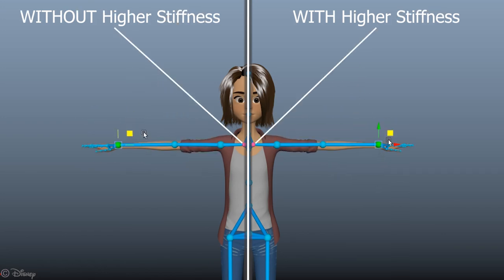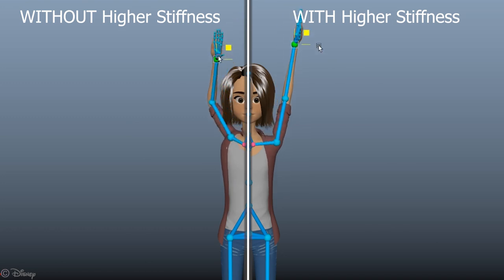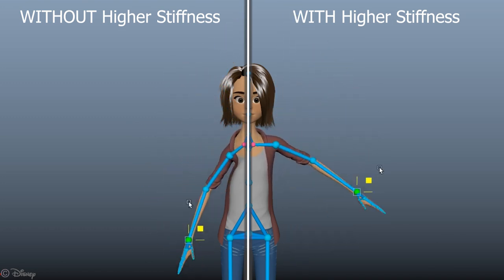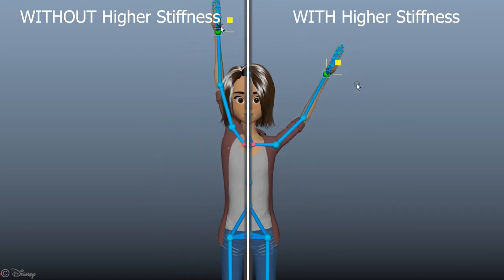Stiffness defines how much a joint resists rotation. For example, the clavicle usually rotates less than the shoulder when the arm is moving.